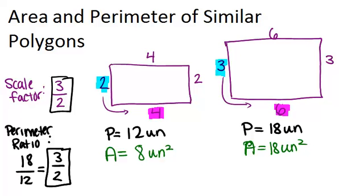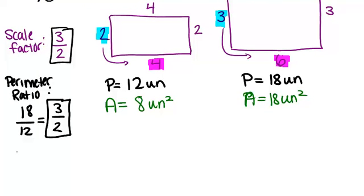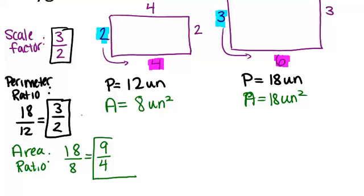So now let's look at the ratio between those two areas. And again, looking at the larger area divided by the smaller area, that gives you 18 divided by 8, which is 9 fourths. Now, how does 9 fourths relate to the scale factor? Well, 9 is 3 squared and 4 is 2 squared. So this is really 3 over 2 squared. So in general, the ratio between the areas of similar shapes is always the scale factor squared.